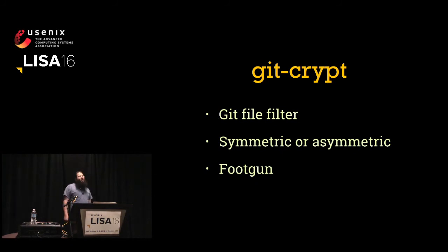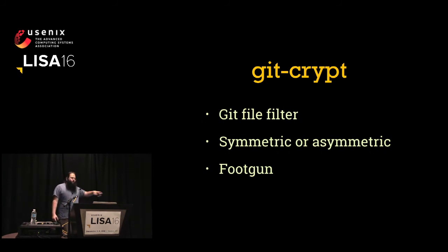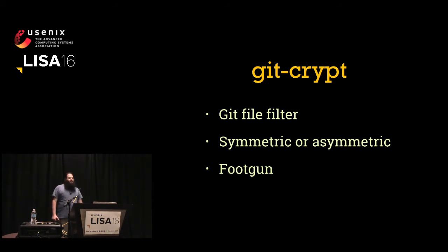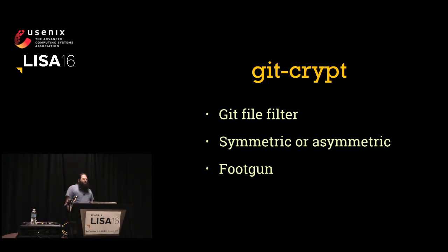A lot of people want to put secrets in Git but encrypt them. GitCrypt is probably the best of those tools — it supports both symmetric and asymmetric operations — but it's still not a great idea. Audit logs are still non-existent. Also, with GitCrypt you usually have to specifically mark files as desired to be encrypted, meaning if you ever forget one, you may push secrets to Git in the clear.